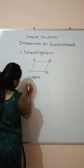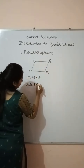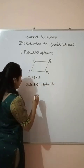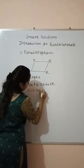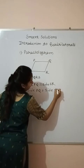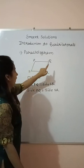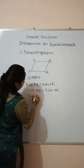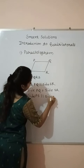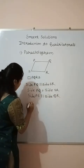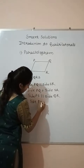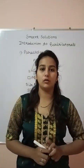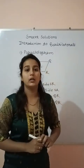So we will write like this: side PQ is parallel to side SR, or we can write side PQ is equal to side SR. Then the second pair of opposite sides is PS and QR: side PS is parallel to side QR.